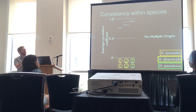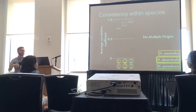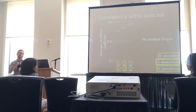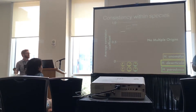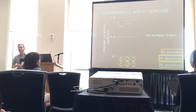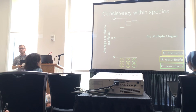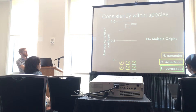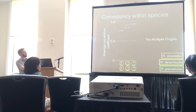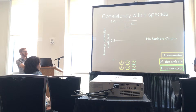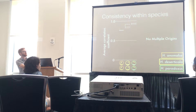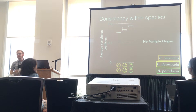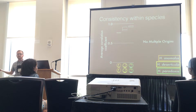I asked how consistent the ancestry assignments are between individuals of the same species, measuring an average correlation coefficient of admixture values. For these species, the correlation coefficients are quite high — around 0.8 to 0.9 — so it's definitely not consistent with multiple independent origins, as you would expect to see more variation in admixture values between individuals.